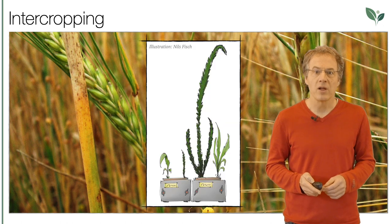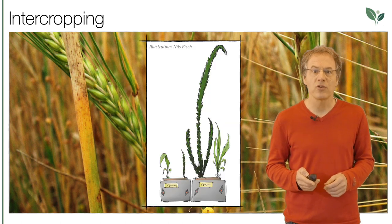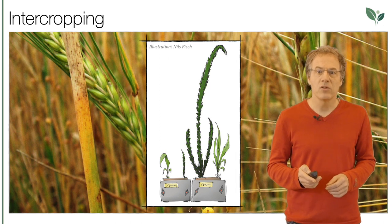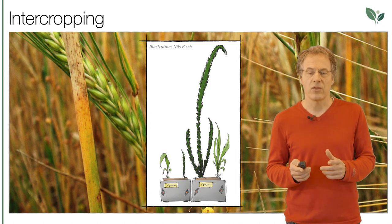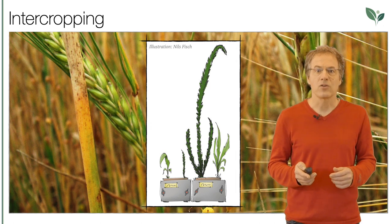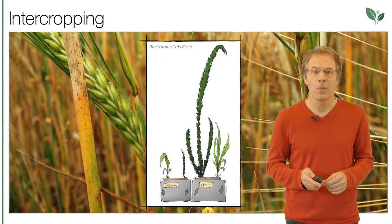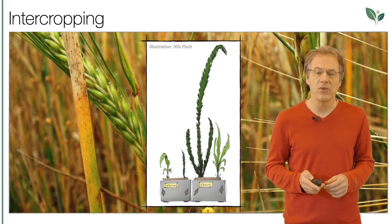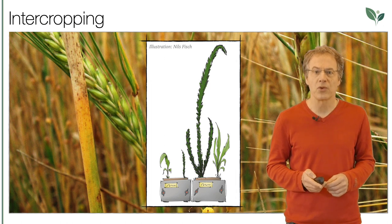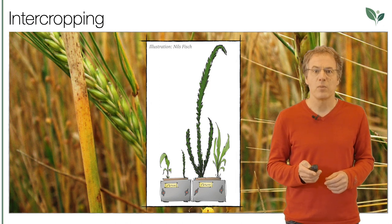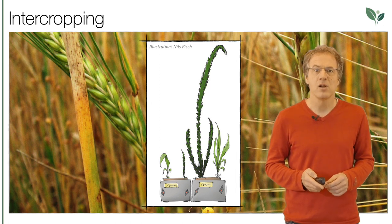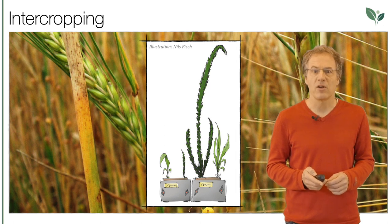Studies show, for example, that millet and flax support each other in the presence of mycorrhiza. These mycorrhiza are not present in the left container, but in the right container the soil has been inoculated with them, which leads to significantly improved growth behavior of both cultures — whereby flax even benefits significantly from the photosynthesis products of millet.